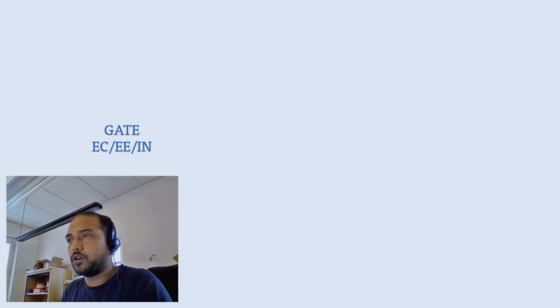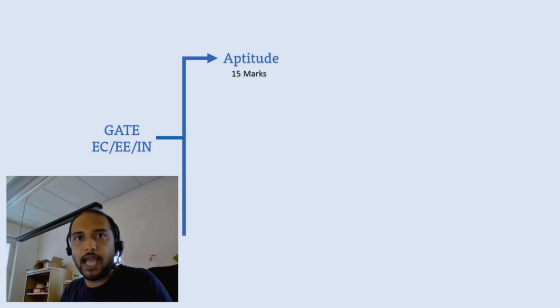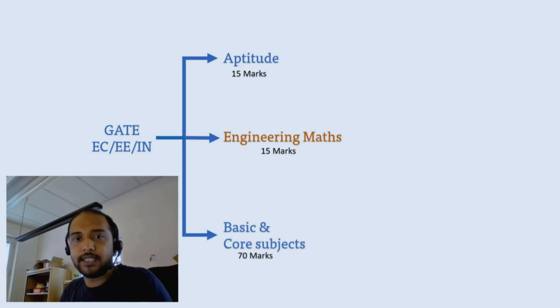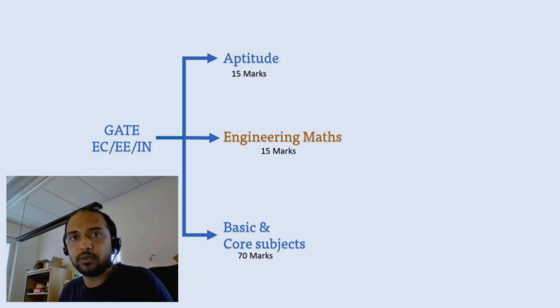The GATE exam syllabus for electronics communication, electrical and instrumentation has three sections. The first is aptitude, the second is engineering math — which in this video we will look into in detail — and then you have the basic and core subjects. For the full syllabus of electronics and communication for GATE, please check out the video in the i-button. Let's look at what topics are there in engineering maths.